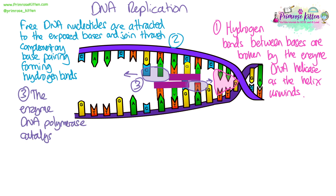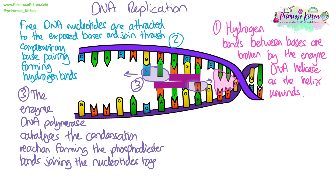Then we need another enzyme called DNA polymerase — it's really important that you put the word DNA in front of these enzymes when talking about DNA replication. The DNA polymerase enzyme moves along the new bases and catalyses the condensation reaction that forms the phosphodiester bonds joining the phosphate-sugar backbone of the new nucleotides together, forming the new strand.